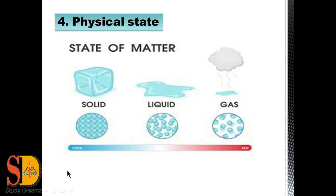The second state is liquid. In the liquid state, particles are less tightly packed than in the solid state, which is why they flow easily and are known as liquids. Milk, juice, oil, and water are examples of the liquid state. The third state is gas. In gas, the particles are very loosely packed, so they can move very quickly and change their positions. Gases do not have fixed shape or size. Oxygen, air, nitrogen, and carbon dioxide are some examples of gases.